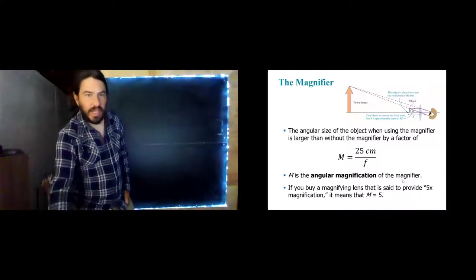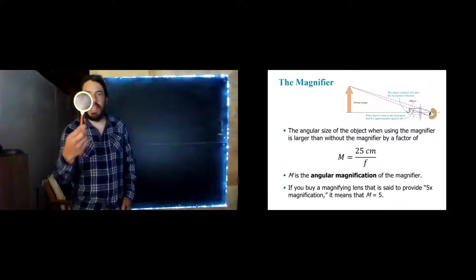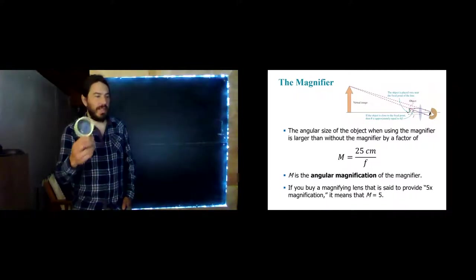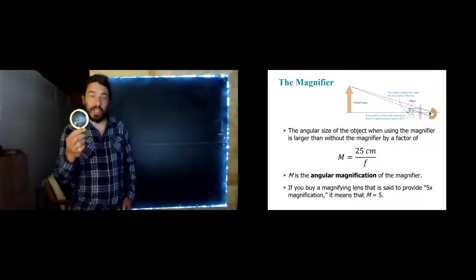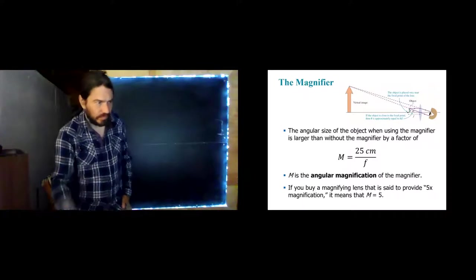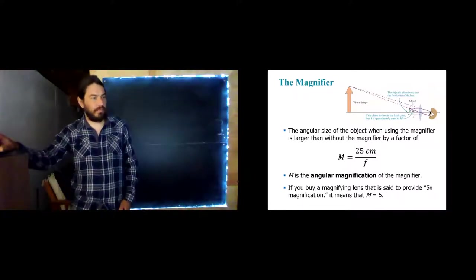M is the angular magnification of the magnifier. And so, I went online and I found this and it claimed it was 10x, which theoretically means it has 10 times magnification.